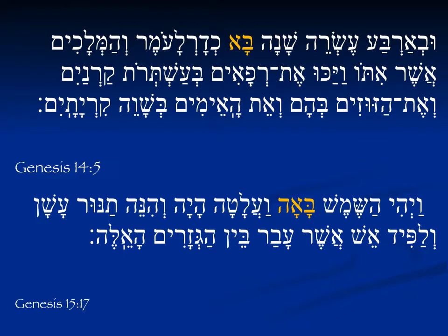Genesis 15:17 has a feminine form, and we have the same concept for translation. 'Vayehi hashemesh ba'ah' — 'And it was, the sun was coming' — or more precisely, setting. 'Ba'alata hayah' — 'And it was darkness.' The word 'hayah' tells us that's definitely past tense, so we can assume the previous verb 'ba'ah' is also past tense. But it is the third person feminine singular, and it looks and is spelled the same as the participle — which leads to some translation dilemmas.